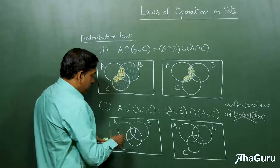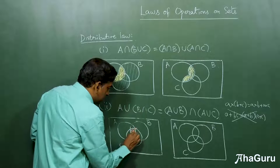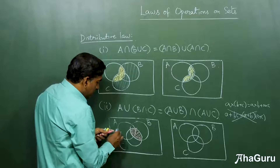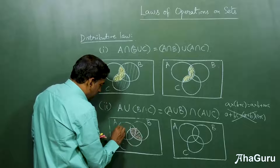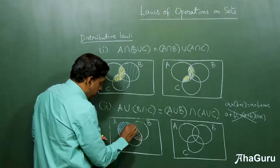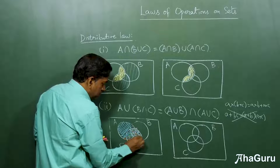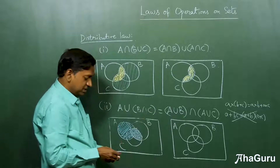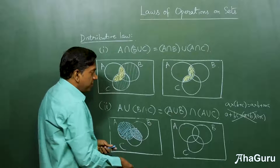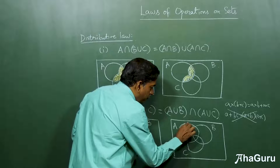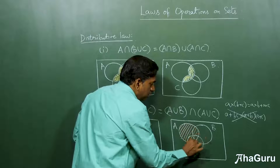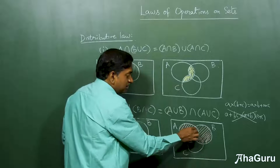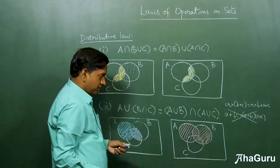As usual, let's start with the left hand side. First, B intersection C would be this region. A union B intersection C would be the set A union this, so it will contain all the elements in A plus this. So this blue is actually our A union B intersection C. Now let's see what happens on the right hand side. First, let's find A union B. A union B will be the full region that is either in A or in B or in both — not common, that is intersection.